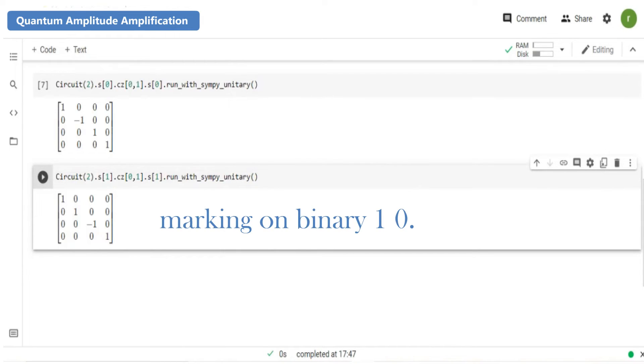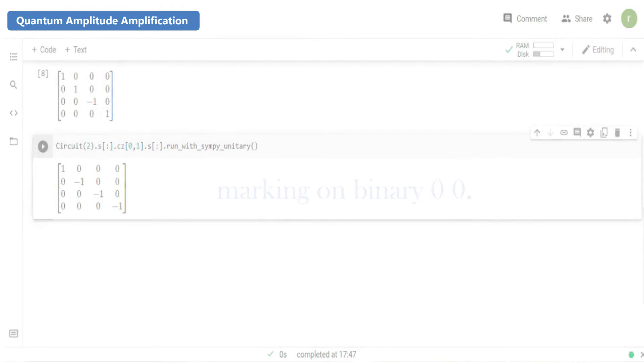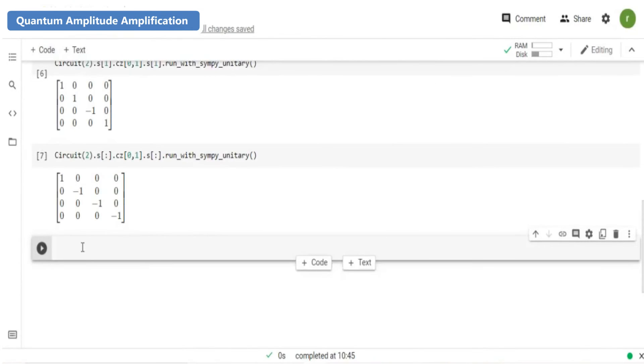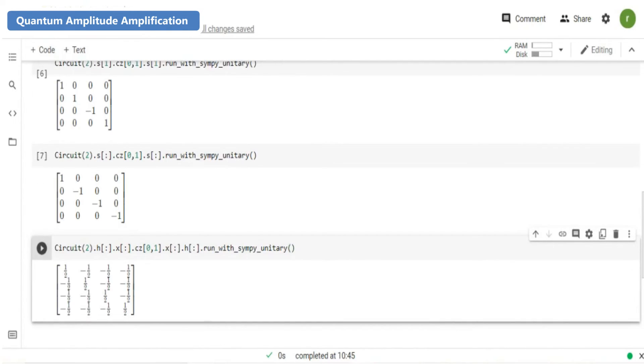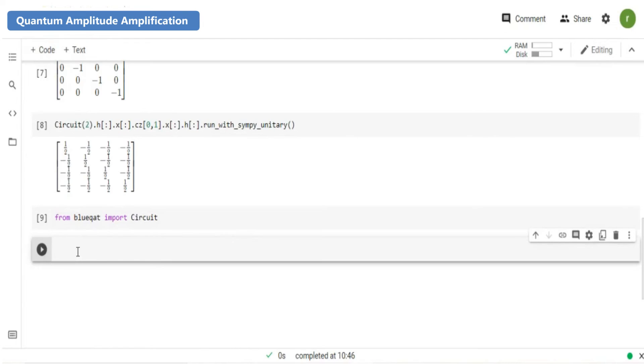Now second step, invert Uw around S using Us. It can be implemented with Blueqat. From the above we were able to rewrite the amplitude amplification oracle with simple gate sets. So now we have the total circuit and let us again import circuit. After initializing all, let us go on with amplitude amplification.